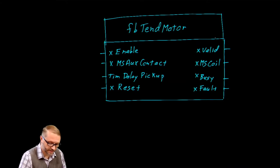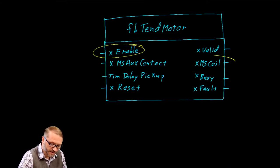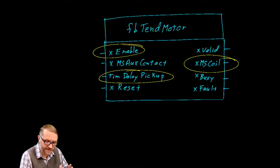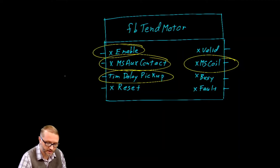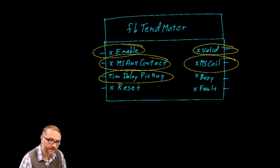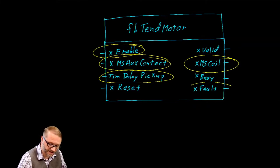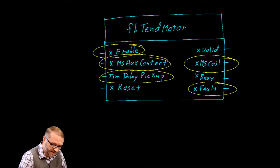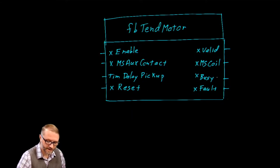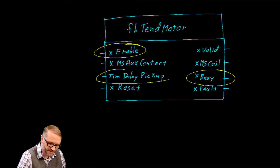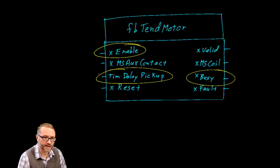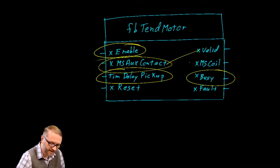This is the interface for that function block. If it's enabled, it will close the coil, activating the motor starter. After a time delay — because it takes time for the contact to physically close — it will monitor the auxiliary contact. If the auxiliary contact is closed, meaning the motor starter is active, the function block signals to the rest of the program that the motor starter is valid. If not valid, it signals a fault — actually, it latches into a fault position until reset. The busy output is only active briefly: when the block is enabled but has not yet timed out, signaling either valid or fault.